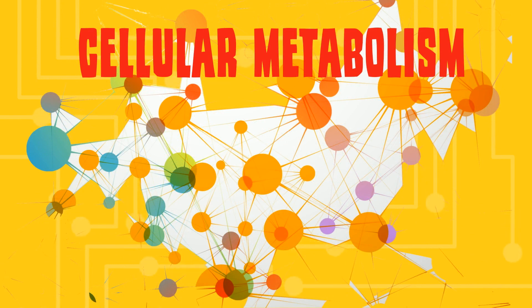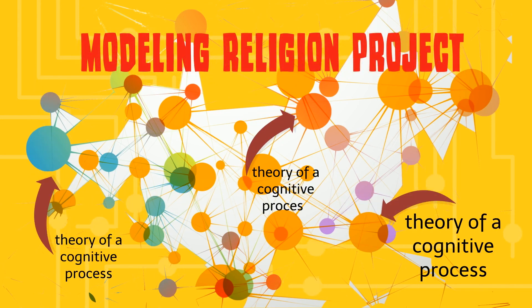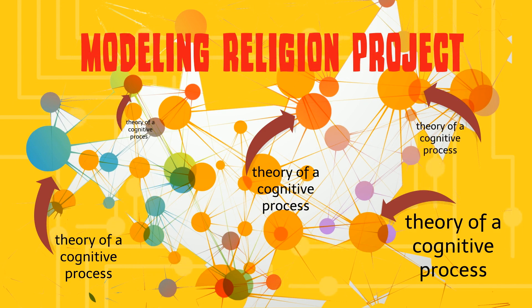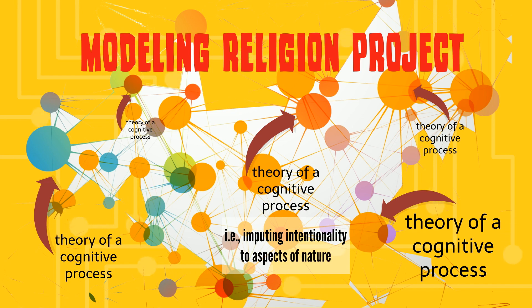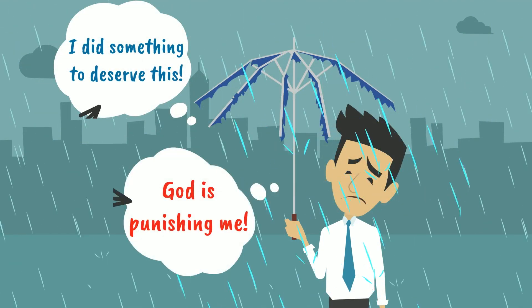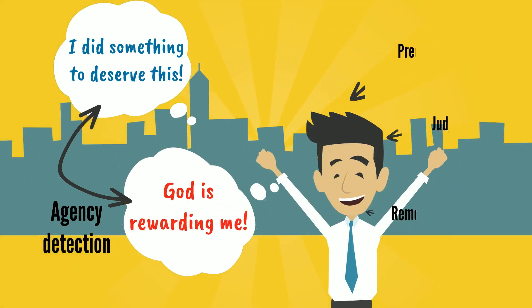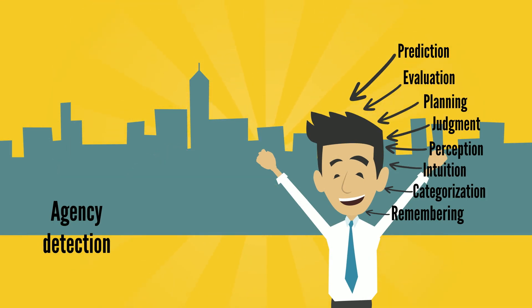In the Modeling Religion Project, the atoms are the tiny theories that express cognitive processes that are never isolated — they never happen without lots of other cognitive processes happening at the same time. For example, the way we impute intentionality to vague aspects of nature: there was a storm, a lightning bolt, and we thought a god or ancestor was angry at us. Those things happen, but they happen alongside a hundred other cognitive processes. They're just tiny little atoms.